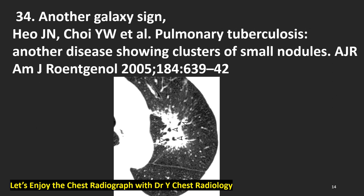Some time later, after the original sarcoid galaxy sign, another galaxy sign was described by Dr. Ho and Dr. Choi et al. — 'Pulmonary tuberculosis: another disease showing clusters of small nodules — galaxy sign,' American Journal of Roentgenology, 2005. Galaxy sign — clusters of small nodules — but this is not sarcoidosis, but tuberculosis. Is this similar to the sarcoid galaxy sign?